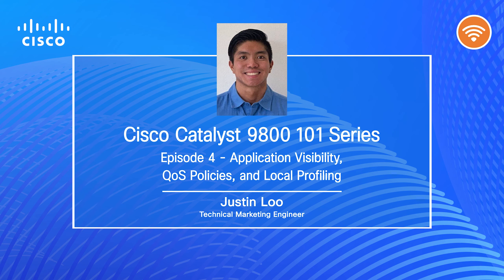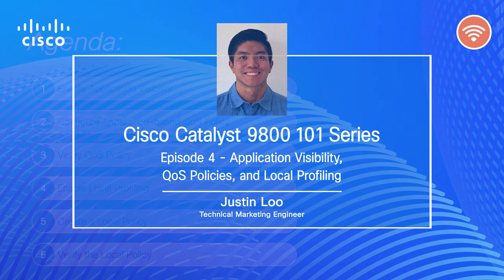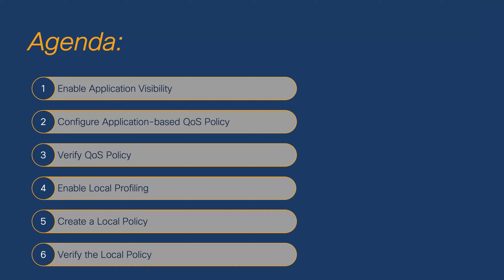Hey everyone, welcome back to the Catalyst 9800 101 series. My name is Justin Liu, a Technical Marketing Engineer here in Cisco's Enterprise Network Wireless BU. Last time, we covered how to create a WLAN using the Advanced Setup Workflow, and today in Episode 4, we'll be covering how to enable application visibility, use that to create an app-based QoS policy, and then verify this QoS policy.